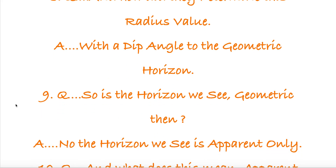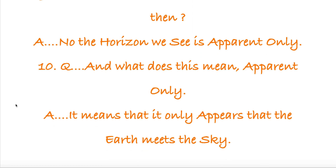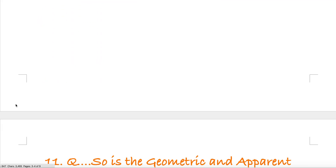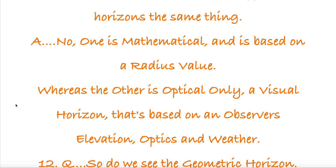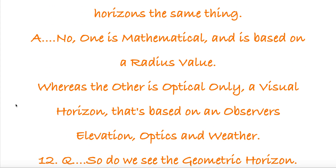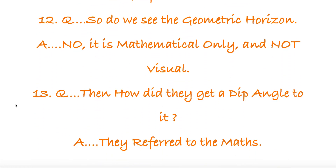So is the horizon we see geometric then? No, the horizon we see is apparent only — it only appears that the Earth meets the sky. So are the geometric and apparent horizons the same thing? No, one is mathematical and is based on a radius value, whereas the other is optical only — a visual horizon based on an observer's elevation, optics, and weather. So do we see the geometric horizon? No, it is mathematical only and not visual.